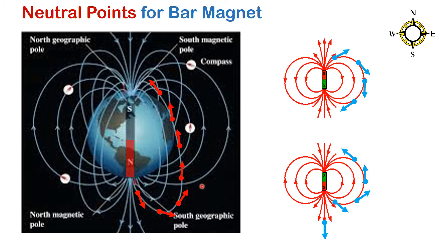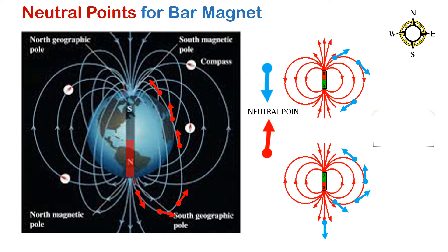Let's consider the magnetic field along the field lines at this point surrounding the earth, and also the magnetic field at this point surrounding the magnet. When the two fields are equal in magnitude and opposite in direction, they create a neutral point.